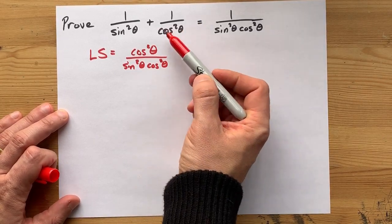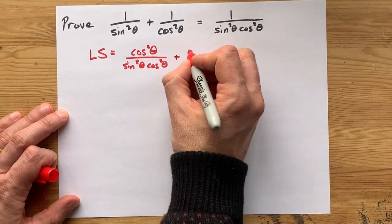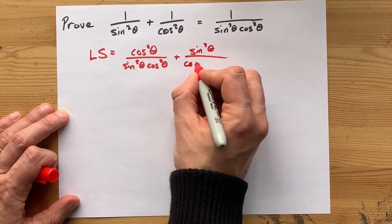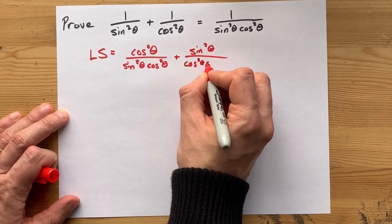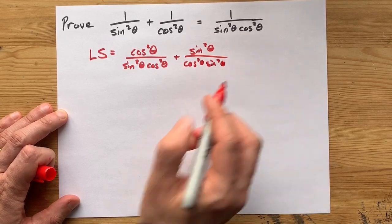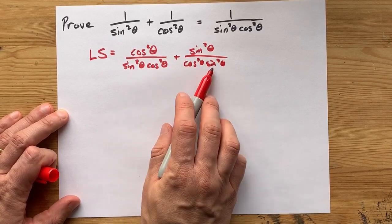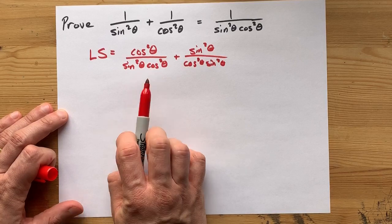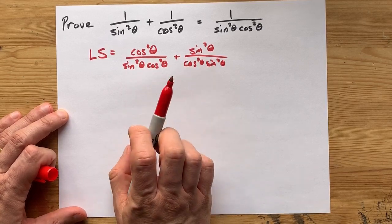Over here, we're missing sine squared theta, so we're going to do something similar. This is sine squared over cos squared times sine squared. Now, these two bottoms are the same even though they're written in a different order. Just like 5 times 4 is the same as 4 times 5.